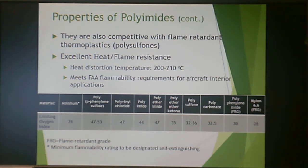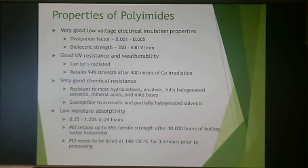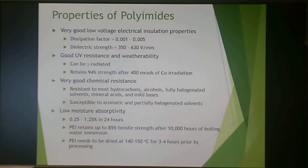I personally like it when my aircraft interiors don't burst into flames, and I have a feeling a lot of other people do too. Its heat distortion temperature is anywhere from 200 to 210°C — excellent heat and flame resistance. It has very good low-voltage electrical insulating properties, but so does polyethylene; you'd only use polyimide if you need that high heat resistance or dimensional stability. It has very good UV resistance and weatherability. It can be gamma radiated, meaning it can be sterilized or used in spacecraft applications — there's a lot of radiation in space. It retains 94% of its strength after 400 megarads of cobalt irradiation, which is pretty impressive. It also has very good chemical resistance, though it is susceptible to aromatic and halogenated solvents.